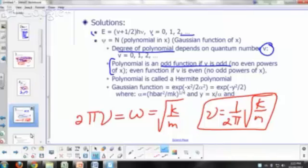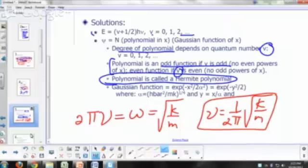It's all going to be odd powers of X. And if V is even, on the other hand, if you write out the polynomial, you're going to only see even powers of X. You won't see any odd powers of X. Now the polynomial term here is known as a Hermite polynomial. And there's a specific formula for that. But we're not going to go into detail as far as that's concerned. We're just going to focus on the big picture here, what the polynomial looks like.